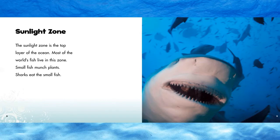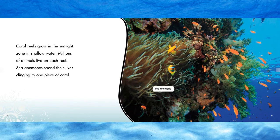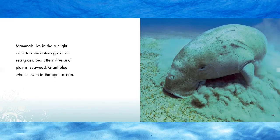Sunlight zone. The sunlight zone is the top layer of the ocean. Most of the world's fish live in this zone. Small fish munch plants. Sharks eat the small fish. Coral reefs grow in the sunlight zone in shallow water. Millions of animals live on each reef. Sea anemones spend their lives clinging to one piece of coral. Mammals live in the sunlight zone too. Manatees graze on seagrass. Sea otters dive and play in seaweed. Giant blue whales swim in the open ocean.